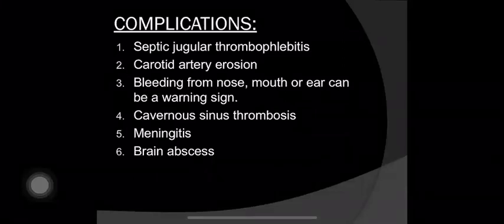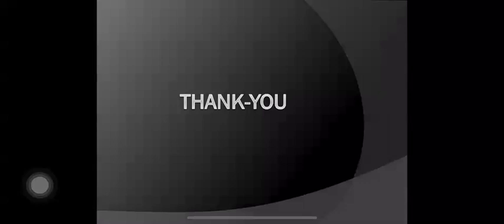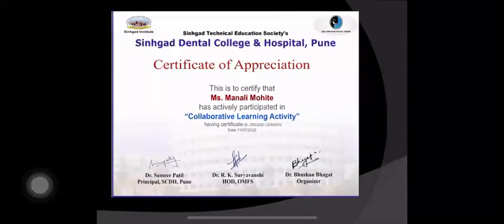What complications can arise? Septic jugular thrombophlebitis — a thrombus in the jugular vein due to bacterial infection. Carotid artery erosion: since the posterior compartment contains the internal carotid artery, infection may lead to erosion. Bleeding from the nose, mouth, or ear can be a warning sign. Other complications include cavernous sinus thrombosis, meningitis (inflammation of the meninges), and brain abscess. Thank you.